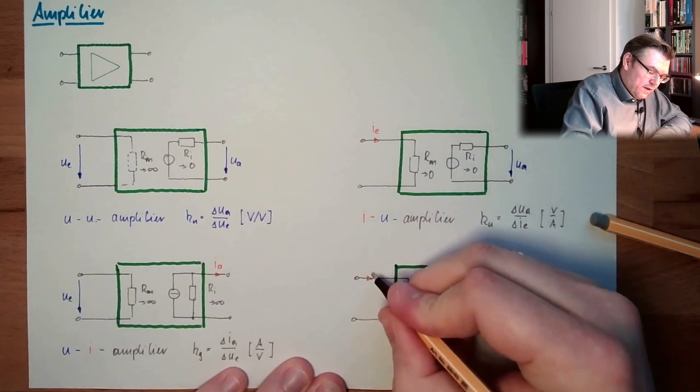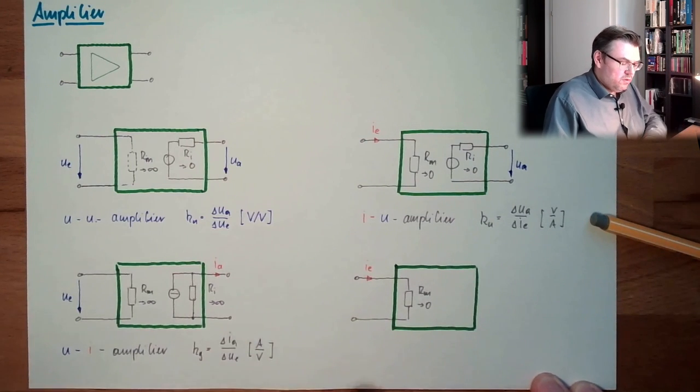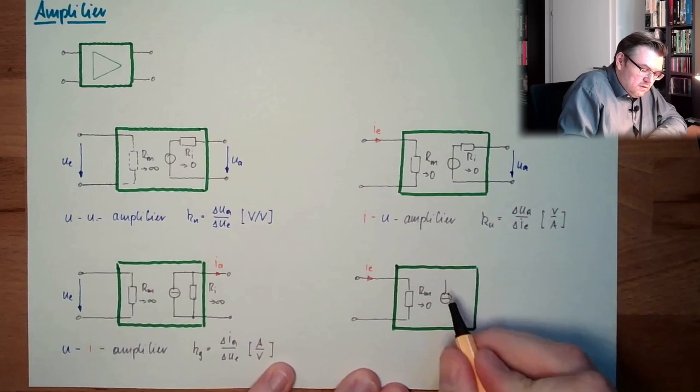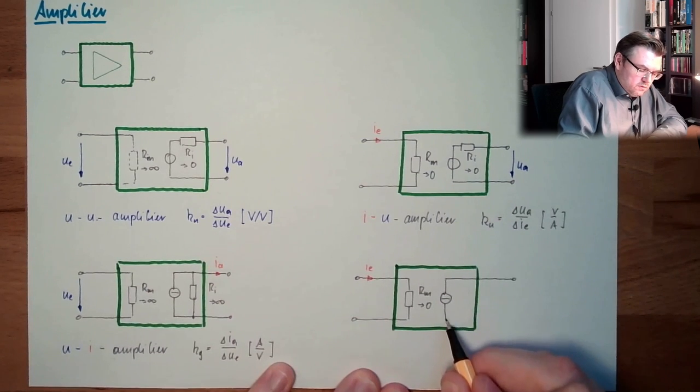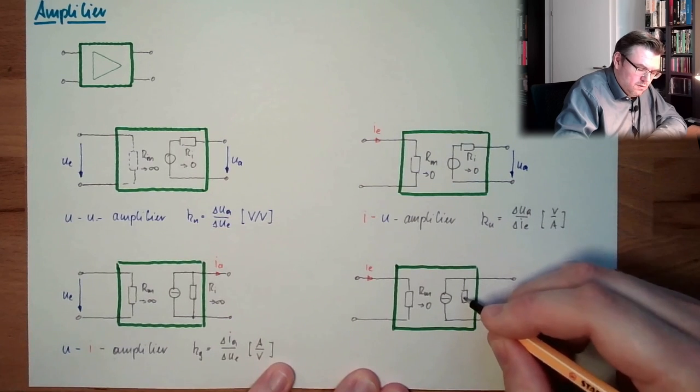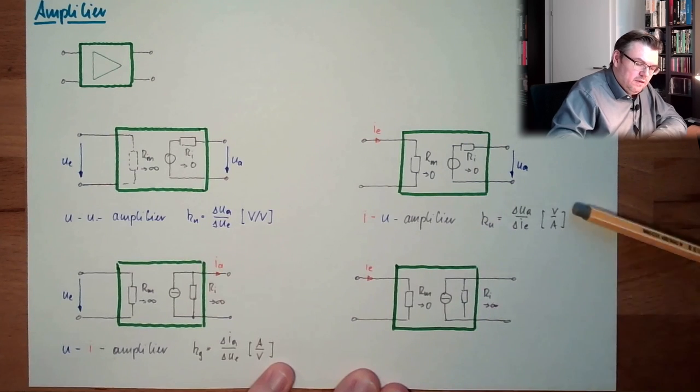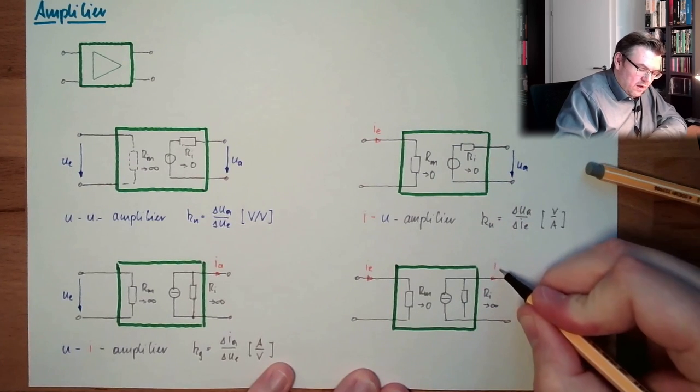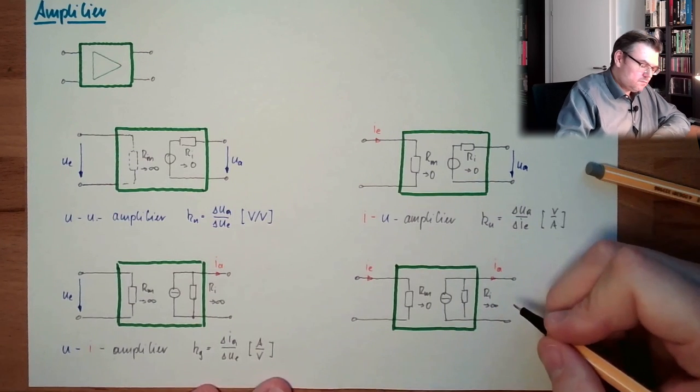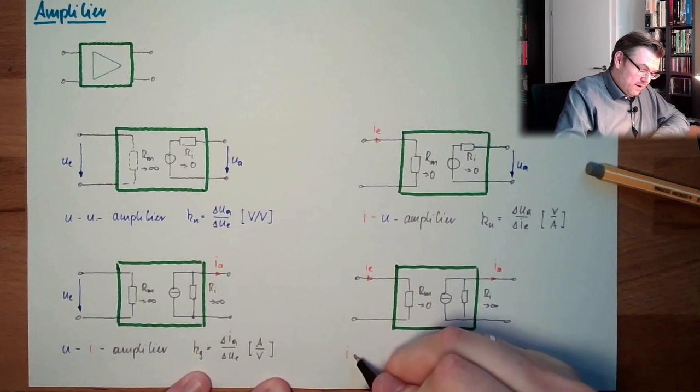Input again current signal and now what is missing, output also current signal. So I have a current source here. Ri shall be unlimited in this case and we have here an output voltage Ia and this thing here is called an II amplifier.